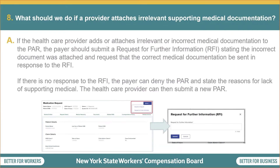Next question: what should we do if a provider attaches irrelevant supporting medical documentation? If the healthcare provider adds or attaches irrelevant or incorrect medical documentation to the PAR, the payer should submit a Request for Further Information (RFI) stating the incorrect document was attached and requesting that the correct medical documentation be sent in response to the RFI. If there is no response to the RFI, the payer can deny the PAR and state the reasons for lack of supporting medical. The healthcare provider can then submit a new PAR.